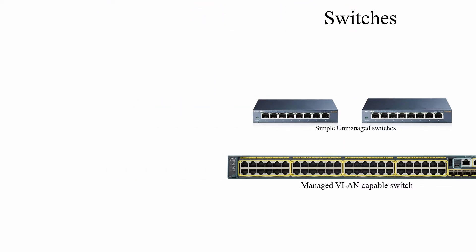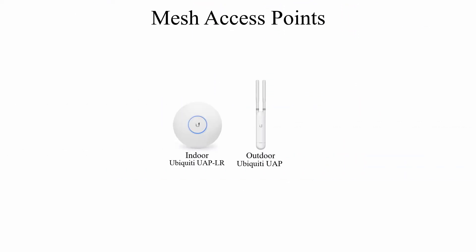A capable outdoor access point is required for one of the connection scenarios. The Ubiquiti UAP is a good option because it allows for five VLANs, a captive portal, and access scheduling.